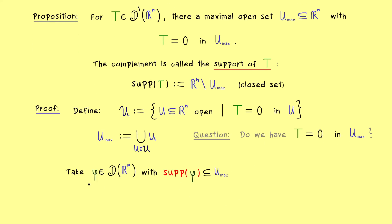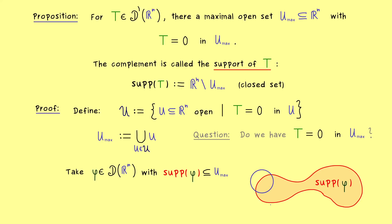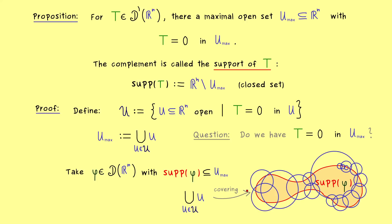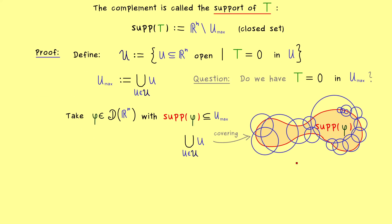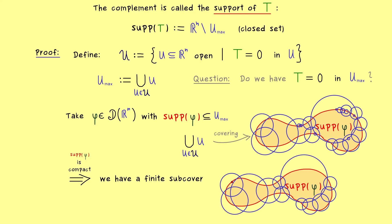To prove this, we take an arbitrary test function φ whose support lies completely inside U_max. Since the support of φ is a compact set covered by the union, we have infinitely many open sets U covering it. But by the compactness property, finitely many already suffice — we have a finite subcover. So we can label these finitely many sets u₁, u₂, ..., u_m. This reduces an infinite problem to a finite one.